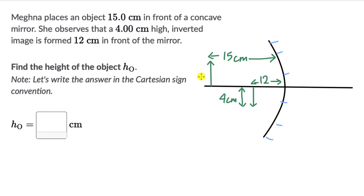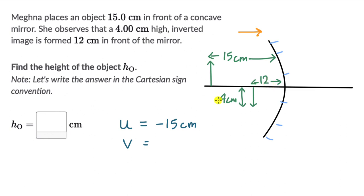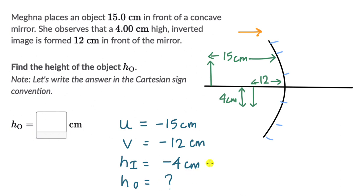Now let's write down the values using the Cartesian sign convention. U is minus 15 cm because the direction of incident light is to the right, so horizontal distances to the left — opposite to incident light — are negative. V is also negative, minus 12 cm, because the image is also on the left-hand side. The height of the image is minus 4 cm because the image is inverted, meaning it is below the principal axis, and vertical distances below the axis are negative. We need to find the height of the object.